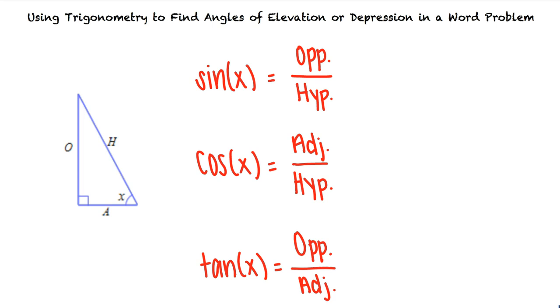Using these identities, we can solve word problems in which we're given two sides of a right triangle and we're asked to find the angle of elevation or depression. Let's take a look at an example problem.